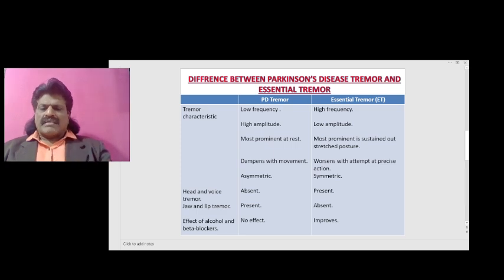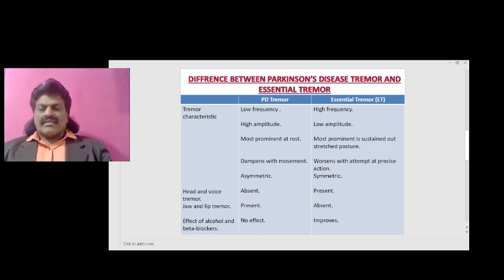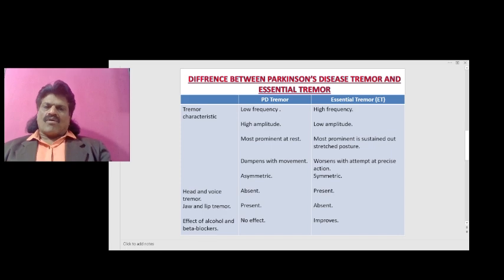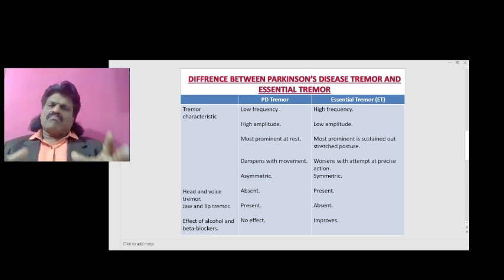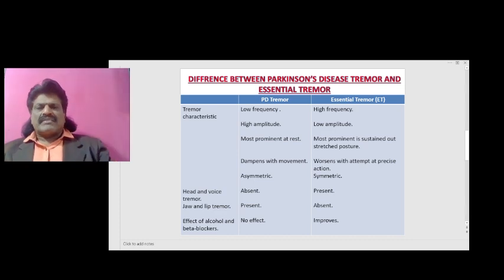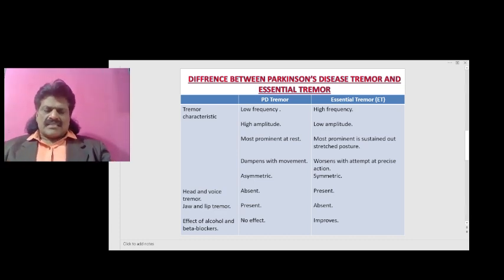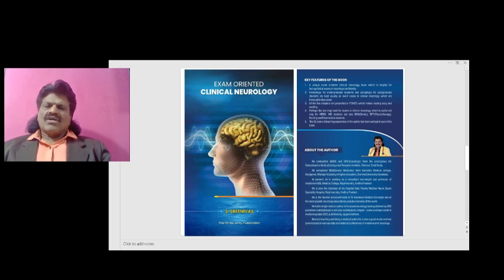Regarding the effect of alcohol and beta blockers: there is no effect on Parkinson's disease tremor, whereas essential tremor improves with alcohol and beta blockers. This is a very interesting differentiating feature. These are all the important points by which we can differentiate Parkinson's disease tremor and essential tremor.